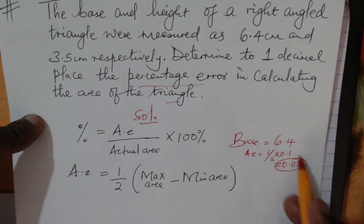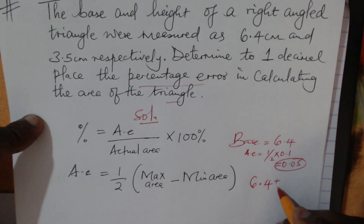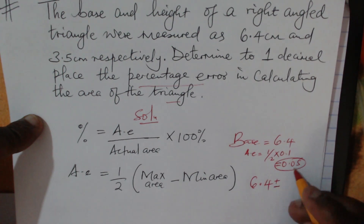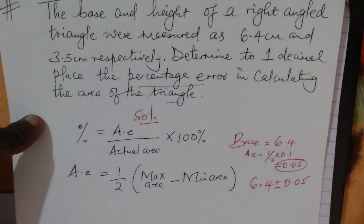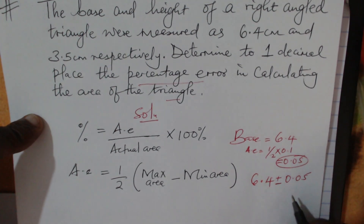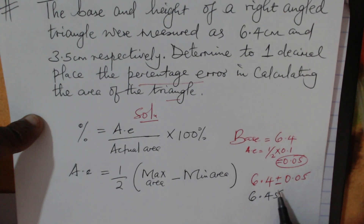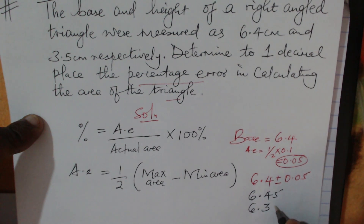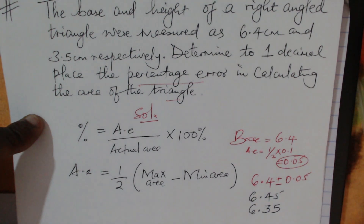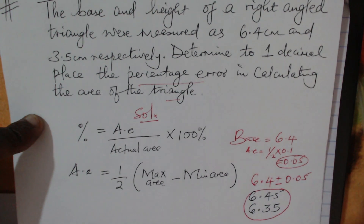This 0.05 is the absolute error for this measurement. So the limits under which the base lies are: 6.4 plus or minus 0.05. Therefore the upper limit is 6.45 — adding 0.05 — and the lower limit is 6.35 — subtracting 0.05. These are the limits of the base.